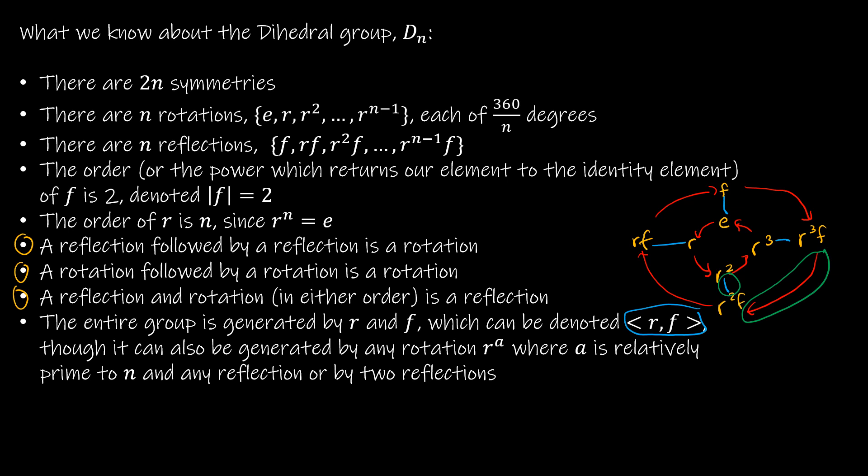Now, I could also generate it by any other rotation, assuming that A is relatively prime to N. So, for instance, I could not use R-squared, because if you'll notice, if I started at E and then I did R-squared, then I did R-squared, I'm never, ever going to get to R or R-cubed by continually doing R-squared. So, it has to be relatively prime to N, and then any reflection with that. So, I could do R-cubed and F would work just fine, or R-cubed and, say, R-squared F, which is a reflection.